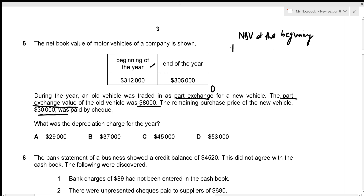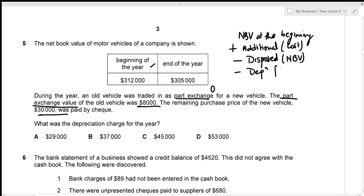I'll set up the motor vehicles schedule: NBV at beginning, plus additional assets purchased at cost, minus disposed vehicles at net book value, minus depreciation for the year, gives the NBV at the end of the year.